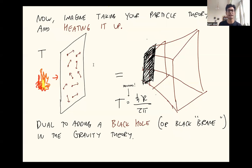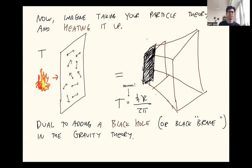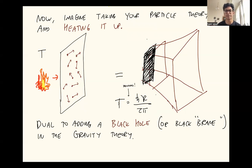Here's something else you can do. Imagine taking your particle theory and heating it up — put it at a finite temperature, like in an oven. All of these little matrix particles will acquire energy from that and start bouncing around in crazy ways, as things do when they're heated up. Now what happens is that using the holographic duality, we find that turning on a finite temperature corresponds to putting a black hole into the curved spacetime in the gravitational theory. And the way to see this goes back to Stephen Hawking. Remember, Stephen Hawking told us that whenever you have a black hole you will have a temperature. That shows there's some deep connection between black holes and temperature. And indeed, the temperature of the black hole we get in the gravitational theory is exactly equivalent to the temperature that we put this particle theory at on the other side of this duality.